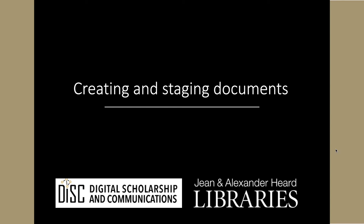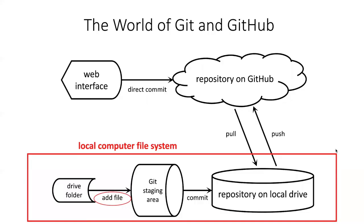So we are going to be talking about this part of the world of Git and GitHub — the things that are happening in your local file system. In particular we're going to look at the process of how files are added to your drive and then moved into the Git staging area.